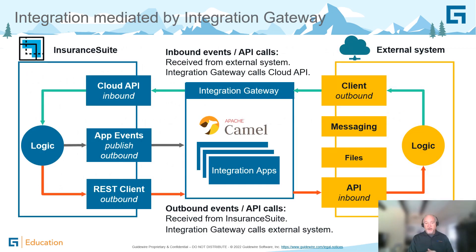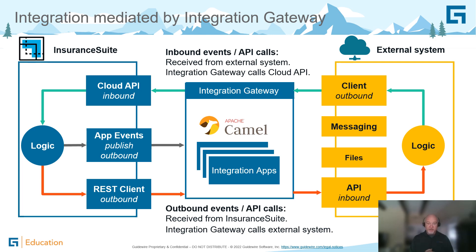Let's talk about how we can mediate our integrations using Integration Gateway. The first example is an inbound client that needs to talk to a system API. For instance, if I need to create a new submission on PolicyCenter, the inbound client can provide the information needed. Integration Gateway can call all the appropriate APIs inside of PolicyCenter and then return back the new policy number to our external system.